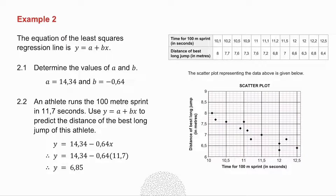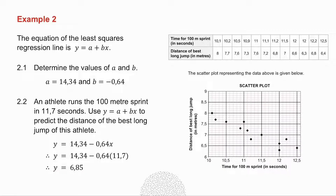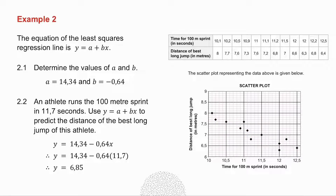2.2 says: an athlete runs the 100m sprint in 11.7 seconds. Use your line of best fit to predict the distance of the best long jump. I know that A is 14.34 and B is minus 0.64. Using that line with x equal to 11.7, I get a y value of 6.85. Looking at the scatter plot, when x is 11.7, a y value of 6.85 makes sense, because the least squares regression line will pass through roughly that region. Always check your answer against the graph to see whether it makes sense.